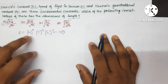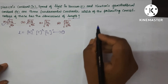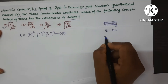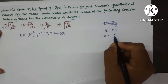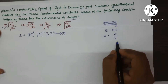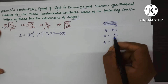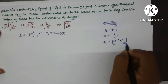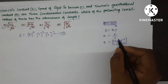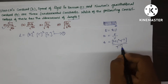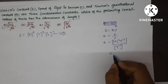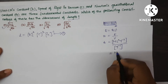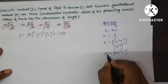Find the dimensions of Planck's constant. We know E = Hν, so H = E/ν. The dimensions of energy are M L² T⁻², and frequency ν has dimensions T⁻¹. So the dimensions of H are M L² T⁻¹. This is the dimensional formula of Planck's constant.